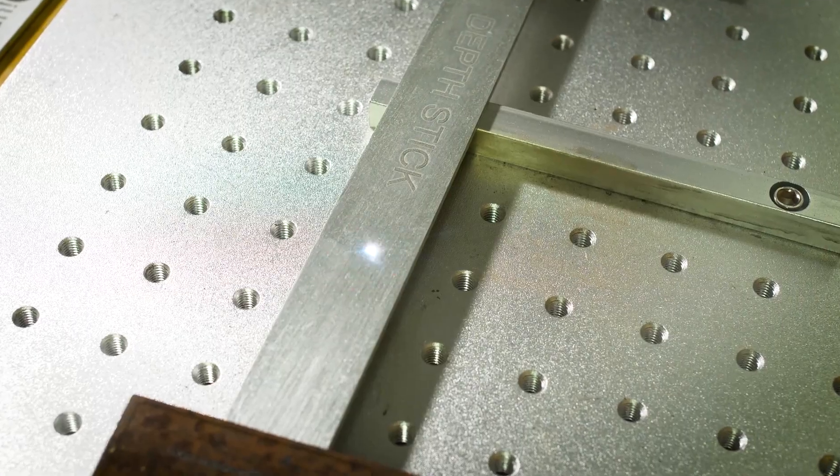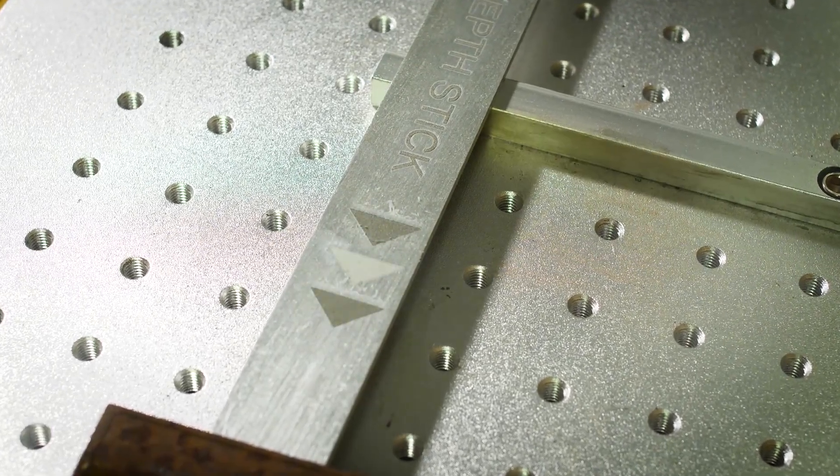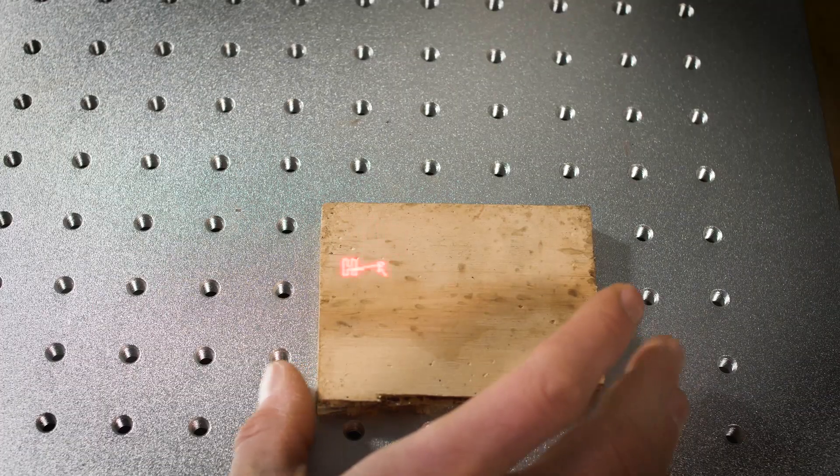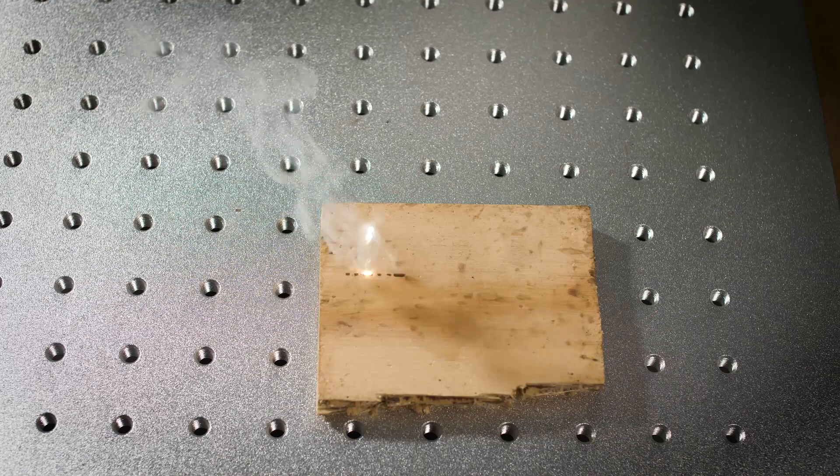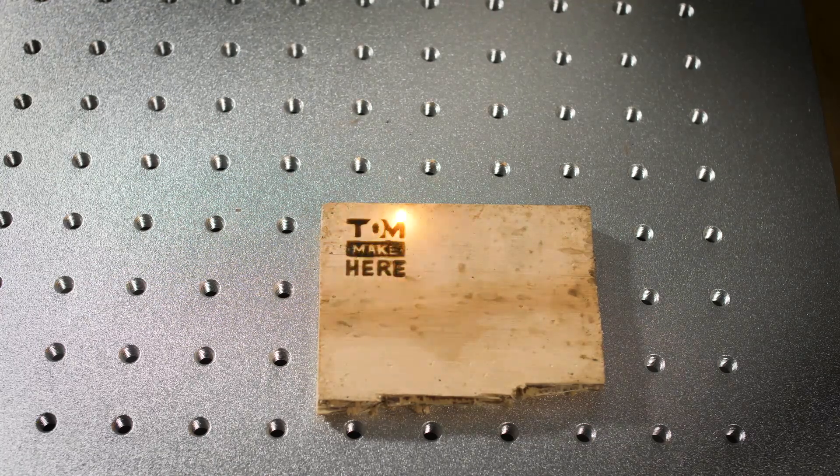By playing with settings it's possible to engrave different shades on some metals, and I'd love to try titanium if I had some. These machines are not really for wood but you can get basic results at a pinch.